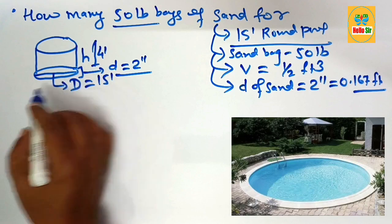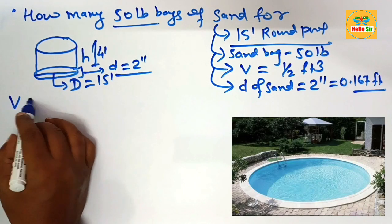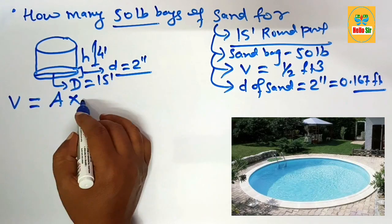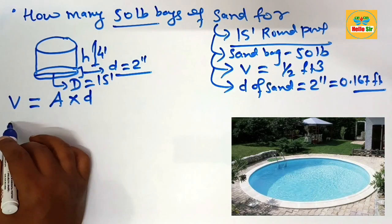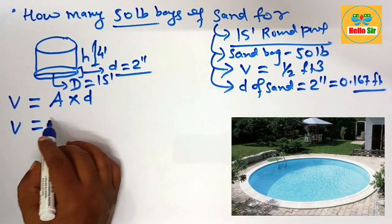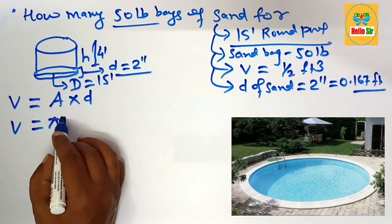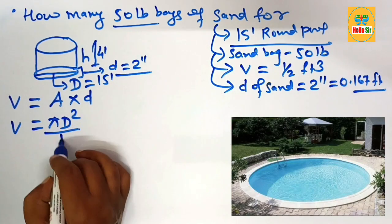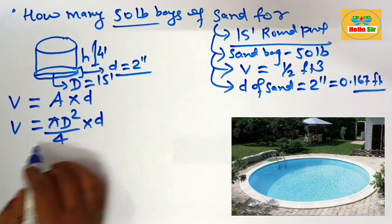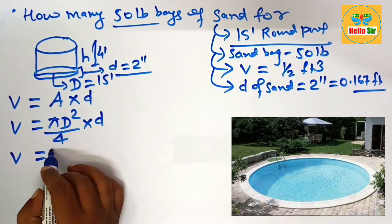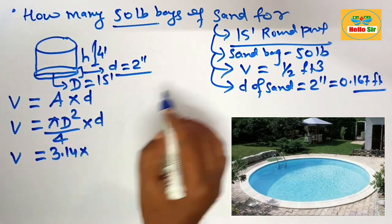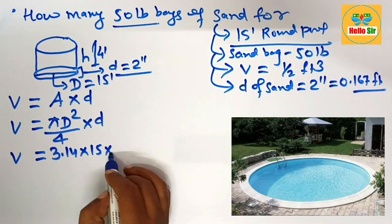To calculate the volume of sand required: Volume of sand = Area × Depth of sand. The area of the swimming pool, which is round in shape, equals π × d² ÷ 4, and this is multiplied by the depth of sand.